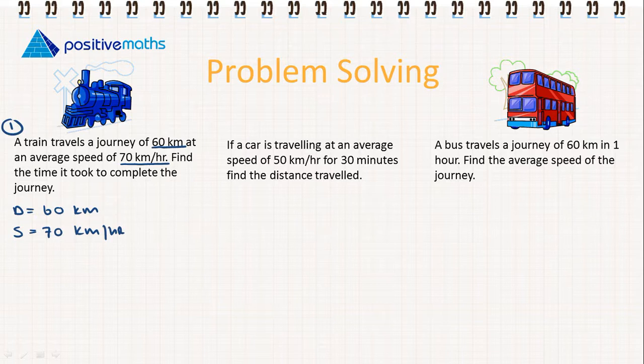Find the time, so we're looking for the time. I'm going to write my triangle here just so we can use it for all three questions. So we have distance at the top and speed by time at the bottom. We use this like we learned before. We cover the one that we're looking for and then that will give us the formula to find it.